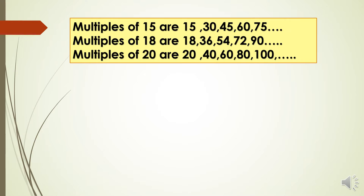Here you can see some more examples of multiples. Multiples of 15 are 15, 30, 45, 60, 75, etc. Multiples of 18 are 18, 36, 54, 72, 90, etc. Multiples of 20 are 20, 40, 60, 80, 100, etc.